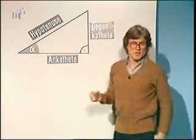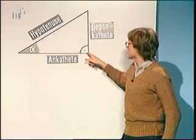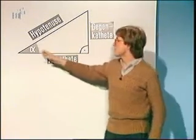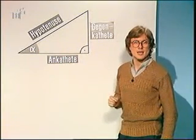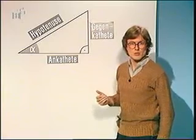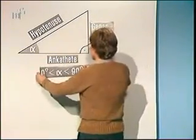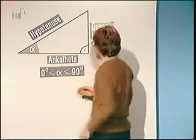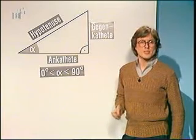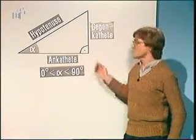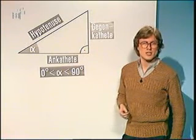Ganz entscheidend bei unseren Betrachtungen war, dass wir es immer mit einem rechtwinkligen Dreieck zu tun haben. Wenn also hier der rechte Winkel vorliegt, kann Alpha nicht größer als 90 Grad sein. Für alle Bestimmungen, die wir hier durchgeführt haben, gilt also, dass Alpha größer 0 und kleiner 90 Grad ist. Nach diesen eher theoretischen Betrachtungen wollen wir jetzt einige Zahlenbeispiele für den Sinus und den Kosinus im rechtwinkligen Dreieck durchführen. Wenn Sie wollen, können Sie diese Beispiele auch an Ihrem Taschenrechner nachvollziehen.